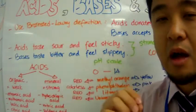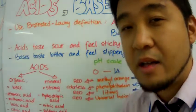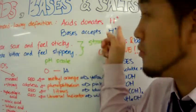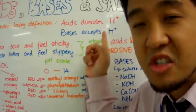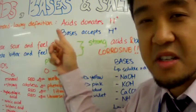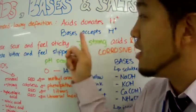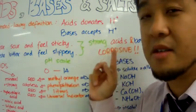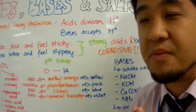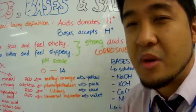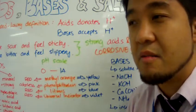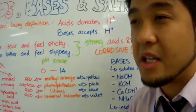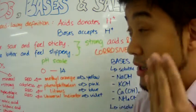How we define acids: acids are anything that donates a proton, which is the hydrogen ion. Bases are anything that accepts protons. You may not really appreciate this definition right now, but later on I'll describe what they are by giving examples of equations.